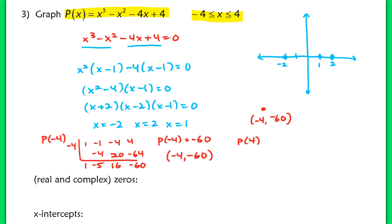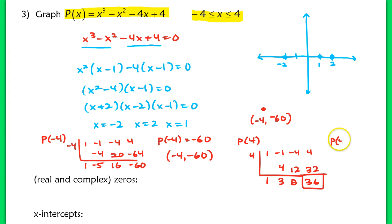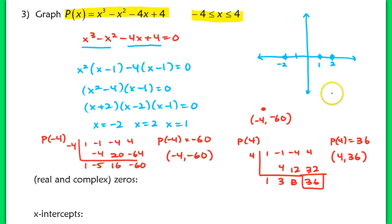We also want to find the other endpoint, so we'll use synthetic substitution once more to evaluate p of 4. Go ahead and pause here if you want to practice this on your own. We know that p of 4 is equal to 36, which means the point (4, 36) lies on the graph of this function.